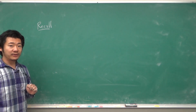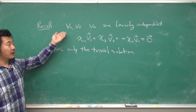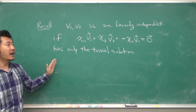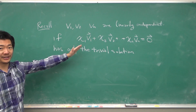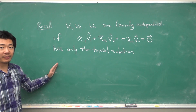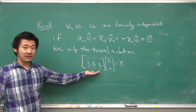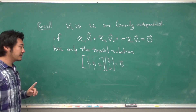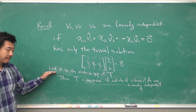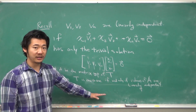Recall that vectors V1 through Vn are linearly independent if the only solution to their linear combination equaling 0 is the trivial solution where all coefficients X1 through Xn are 0. This sounds familiar to what we just established. We can rewrite that vector equation as a matrix equation where the columns are those vectors. So if A is the matrix representation of T, then T is 1-to-1 if and only if the columns of A are linearly independent.